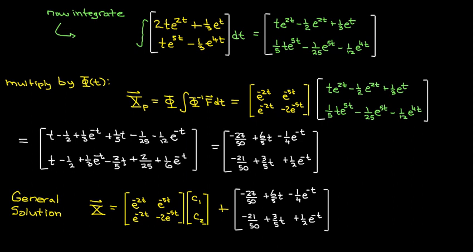We get the general solution then. We can write it as Phi times c — that's the complementary solution — plus the particular solution.